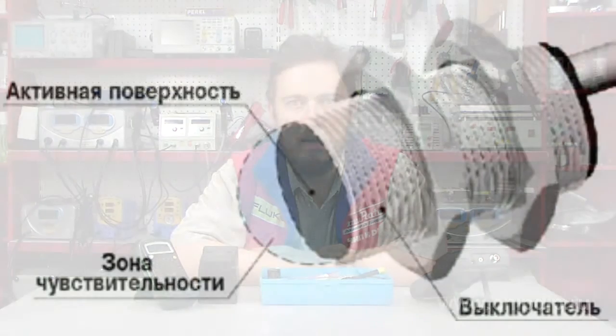Let us consider how the switches work. The active surface of the capacitive switch comprises two metallic electrodes, which may be called the facing of an unbound condenser. The electrodes are connected to the reactive circuit of the high-frequency self-contained generator, tuned to not generate in the absence of an object in the proximity of the active surface. When an object approaches the active surface, it enters the electric field and alters the reactive capacity, causing the generator to start producing vibrations.